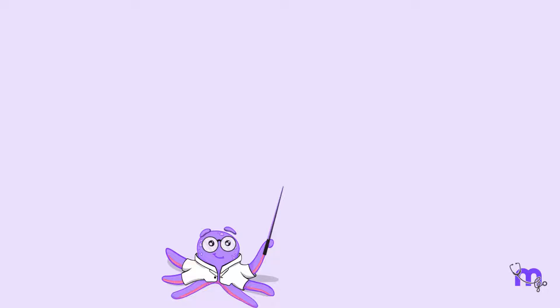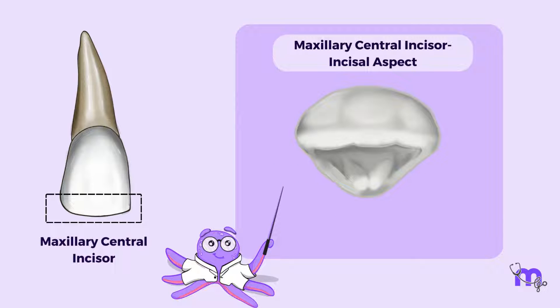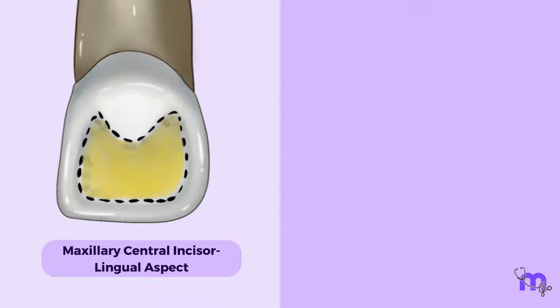For that, let's take the example of the maxillary central incisor. On the incisal part of the tooth, we see a linear mold of enamel. It is called the incisal ridge. Now, if you view the lingual aspect of the tooth, you will be able to see marginal ridges.